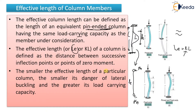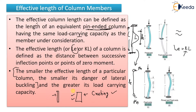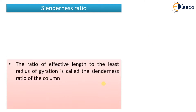The smaller the effective length of a particular column, the smaller its danger of lateral buckling — this is a very important note. Smaller effective length means lesser chance of buckling because short columns fail by crushing, not by buckling, and crushing strength is generally higher. Greater effective length reduces load-carrying capacity, so the effective length of a column should be kept as low as possible.